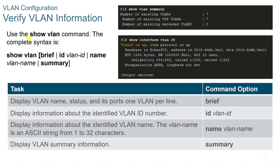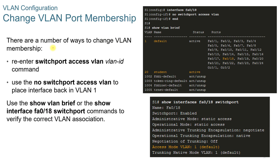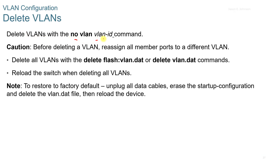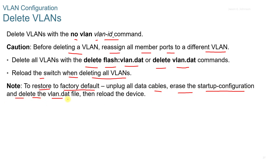You can verify VLAN information using the show VLAN command. To change VLAN port membership, you can re-enter the switchport access VLAN ID, or use the no switchport access VLAN command to place an interface back into VLAN 1. Use show VLAN brief or show interface switchport commands to verify the correct VLAN association. When deleting VLANs, use the no VLAN command with the ID, but reassign all member ports to a different VLAN first. To delete all VLANs, use the delete flash:vlan.dat command and reload the switch. To restore to factory default, unplug all data cables, erase the startup config, delete the vlan.dat file, and reload the device.